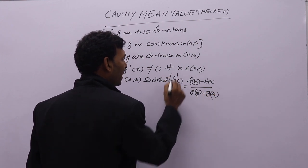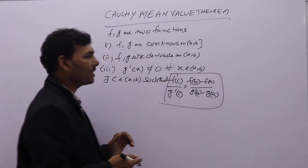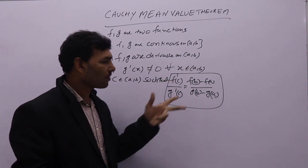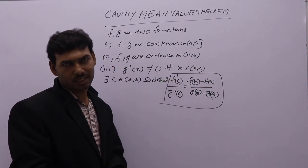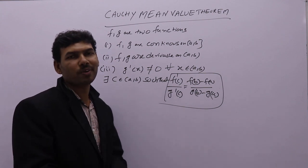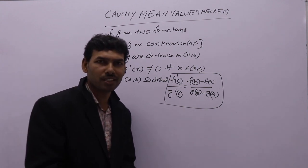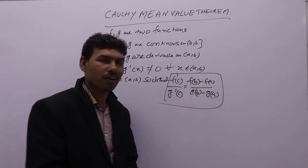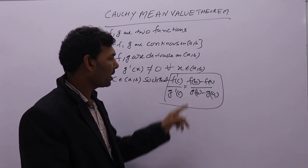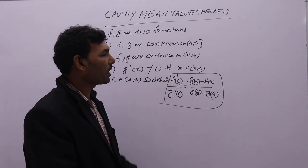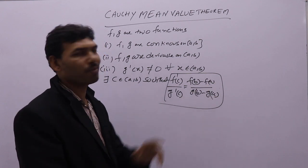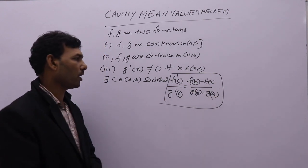Just like if you take Lagrange's mean value theorem applied to two functions, you will get this result. Lagrange's mean value theorem gives f dash of c equal to f(b) minus f(a) divided by b minus a. Similarly, g dash of c equals g(b) minus g(a) divided by b minus a. The (b minus a) terms cancel, and you get the Cauchy form.